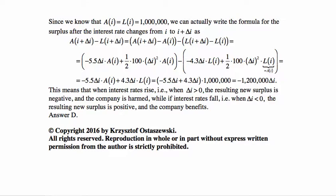This means that when interest rates rise, so when delta I is positive, the resulting new surplus is negative, and the initial surplus was zero, so the company is harmed. While if interest rates fall, so when delta I is negative, the resulting new surplus is positive, and the company benefits. And that's answer D.